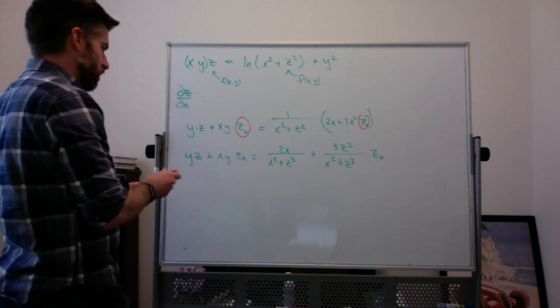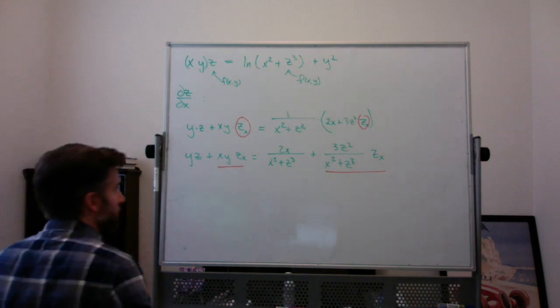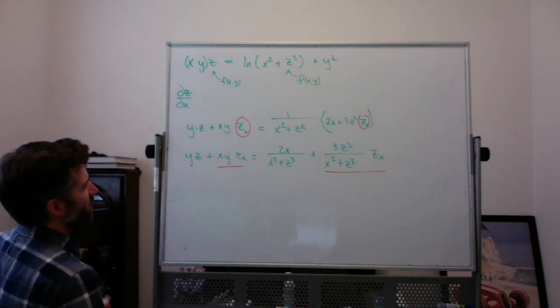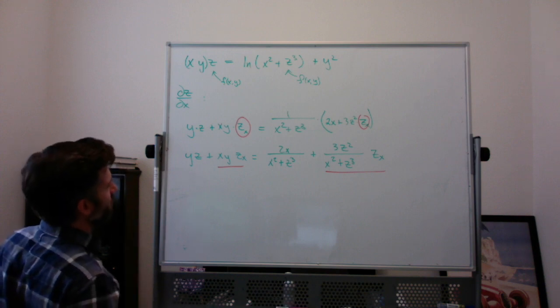Bring your zx terms to one side. So I've got this and this. It doesn't really matter which side you pick. You might multiply everything by x² + z³. That is an option. It might make things look a little nicer. I think I might do that.